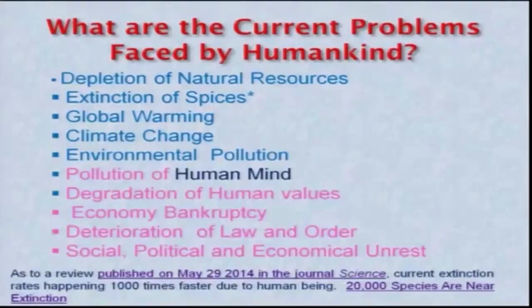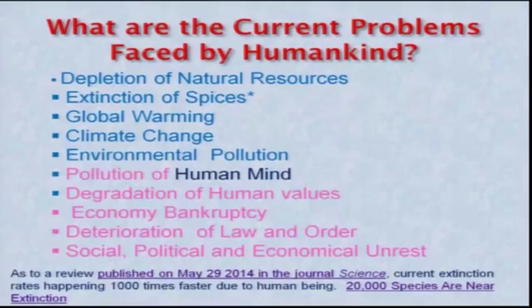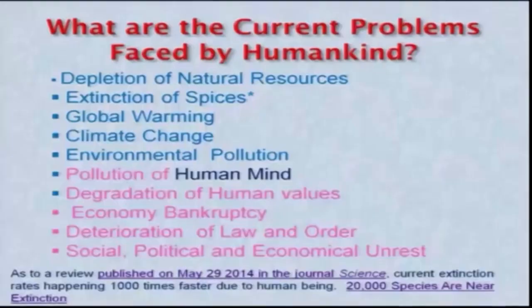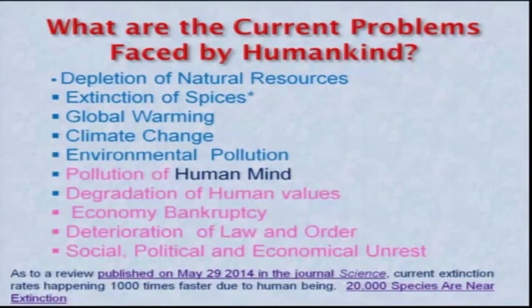A review published on May 29, 2014 in the prestigious journal Science found that the current extinction rate is around one thousand times faster due to human beings. We are supposed to be the protectors of the environment and living beings, yet we are destroying it. Almost around twenty thousand species are near extinction — and we are doing this in the name of development, because of the power we have got through modern technology.